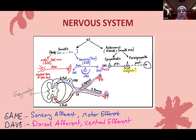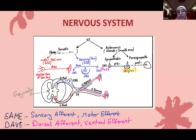The autonomic nervous system controls glands and smooth muscles, regulated by both sympathetic and parasympathetic divisions. Unlike the somatic system which has one neuron, the autonomic system has two neurons: a pre-ganglionic neuron starting from the CNS, and a post-ganglionic neuron ending at the organ. They meet and synapse at the ganglion, where the pre-ganglionic neuron relays information to the post-ganglionic neuron.